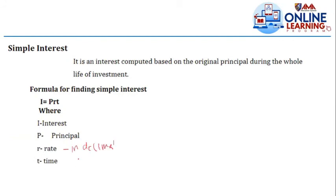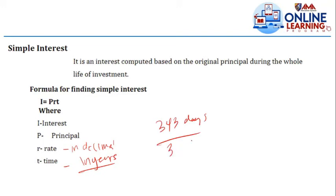The time T must be in years. If given in days, convert by dividing by 365. For example, 343 days divided by 365 gives the time in years. If given in months, divide by 12.